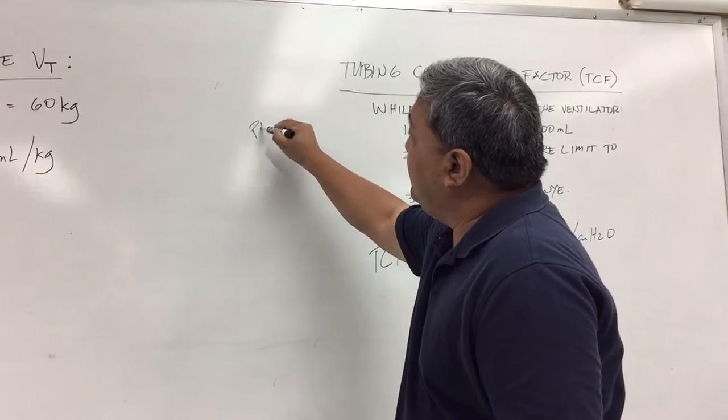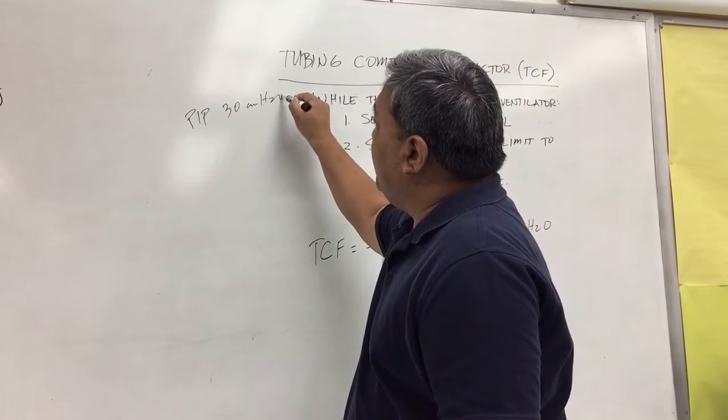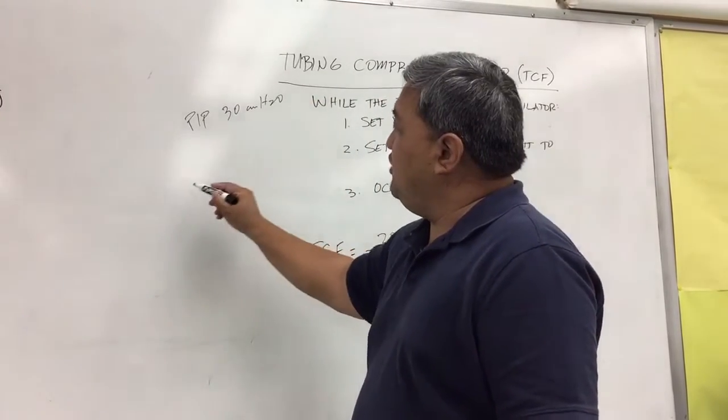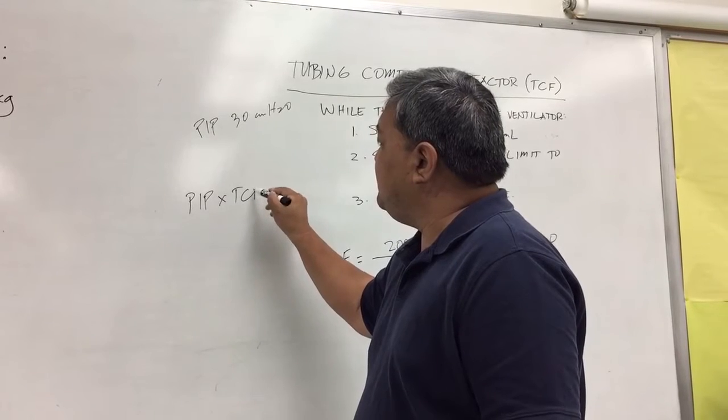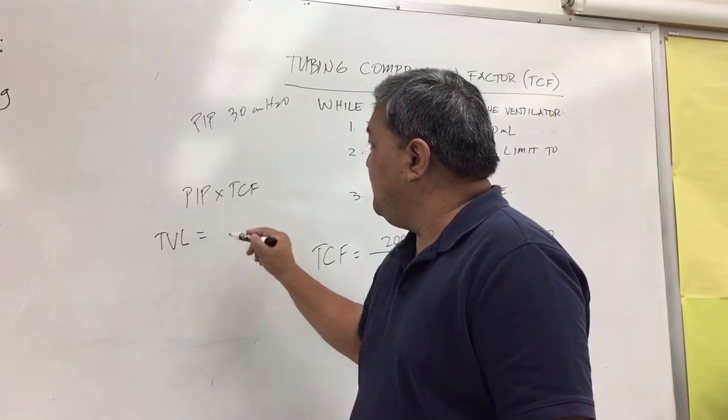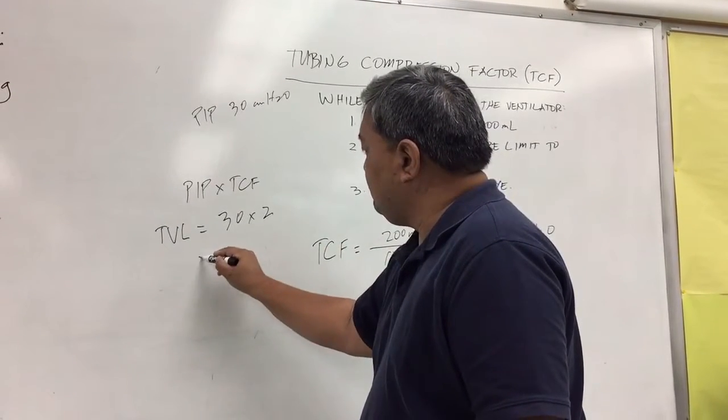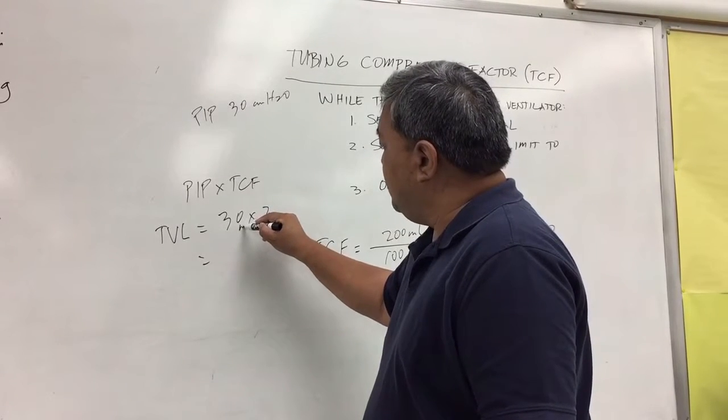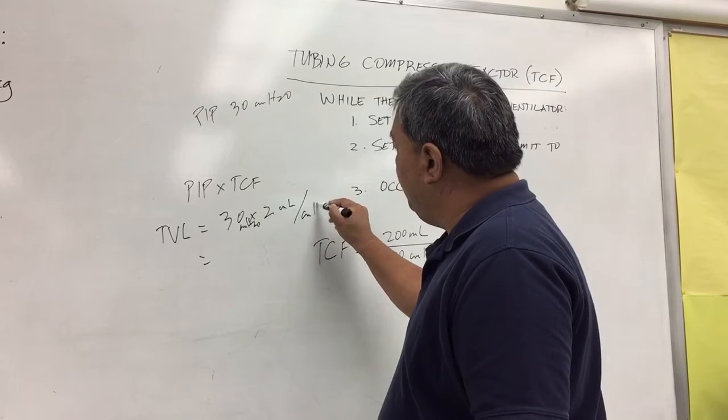While the patient is on the ventilator, let's say it delivers a PIP of 30 centimeters of water pressure. What you're going to do now is multiply the PIP by the TCF to get the tubing volume lost. So 30 times 2 - this is your centimeters of water pressure times mls per centimeter of water pressure.